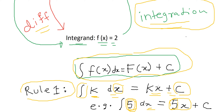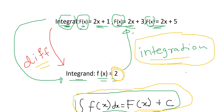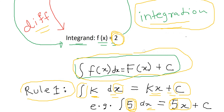When do you apply Rule 1? It's very simple — whenever you have a constant. In the previous discussion we had the constant 2, so we apply this rule and the original function would be 2x plus any constant C — it can be 1, 3, or 5, denoted by C. This first rule of integration can only be applied on constants.